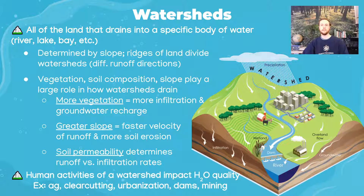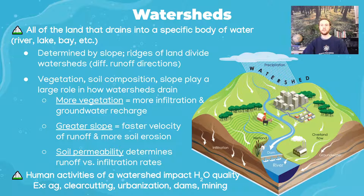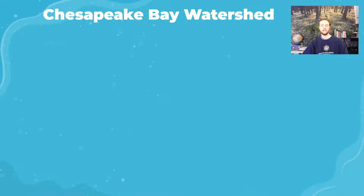Human activities in a watershed directly determine the quality of water in that watershed. Actions like mining, agriculture, or clear-cutting can produce pollutants or loosen soil, meaning that runoff entering the body of water will carry those pollutants or sediments into it.